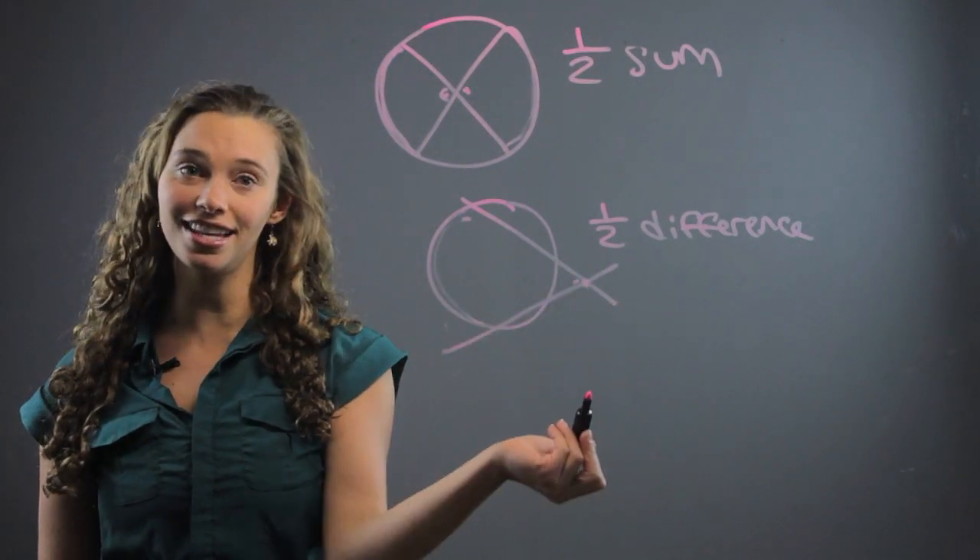So you take this arc, you subtract this arc and then you divide by two to find this angle because as you can see it's much smaller so that would make sense that it's half the difference. And this arc is much bigger.